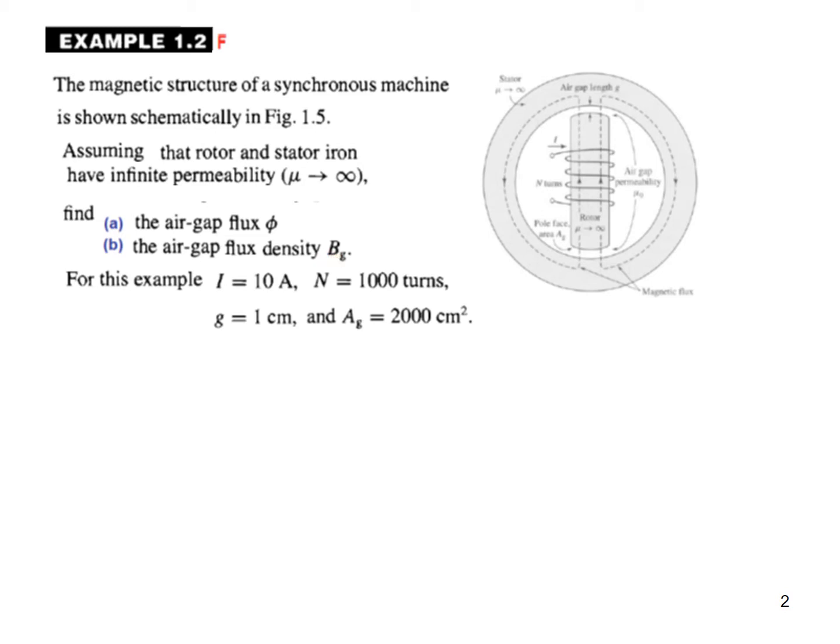The dimensions given are I equals 10 ampere current through the coil, number of turns of the coil is 1000 turns, and the gap, this gap here, is one centimeter and the area of cross section of the air gap, so this area here from air to air, is 2000 centimeter square.